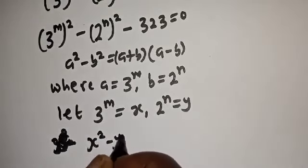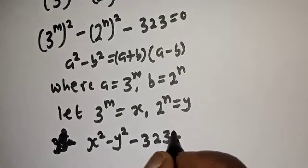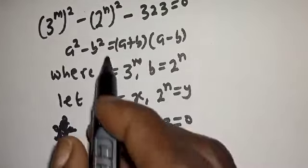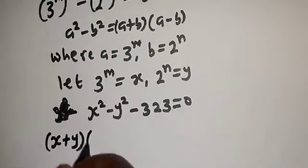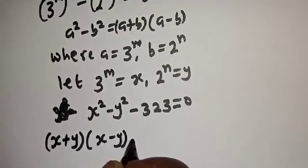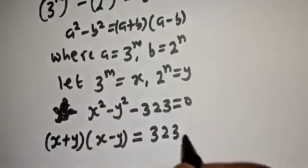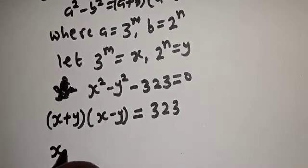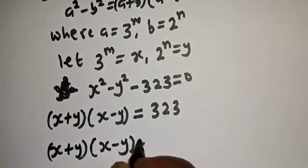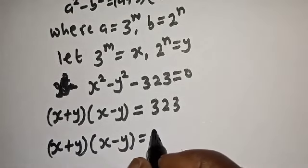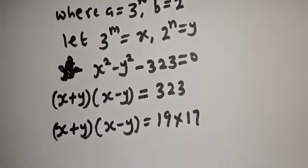So we have s squared minus y squared minus 323 equals 0. Replacing using the difference of squares, we get s plus y, bracket, s minus y equals 323. Now, 323 can be written as 19 multiplied by 17.